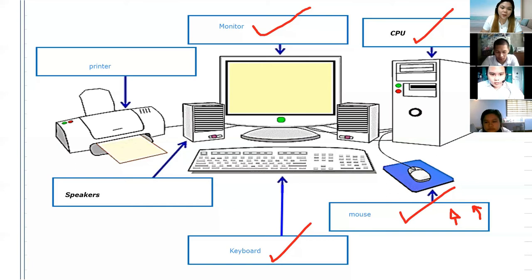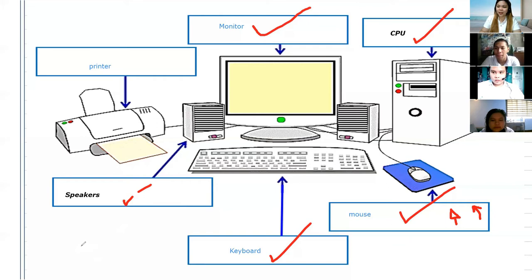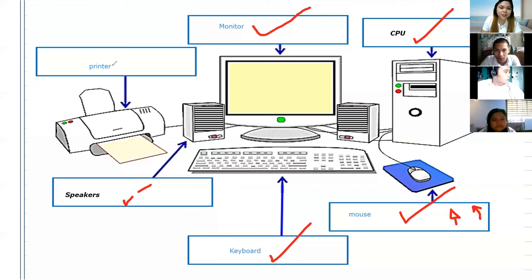How about this one, Enzo? The speaker — we can listen to music inside, it becomes louder, we can really hear or watch. So the speaker is the one we use whenever we want to listen to music or watch a movie. The audio is coming out from the speakers. Very good, Enzo.